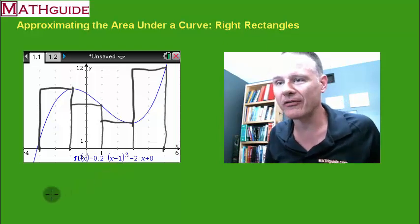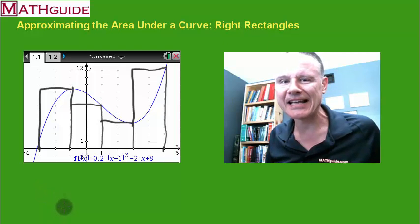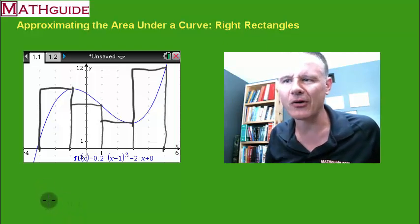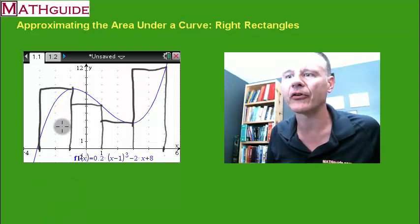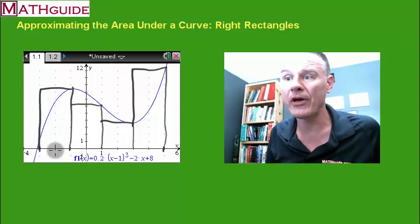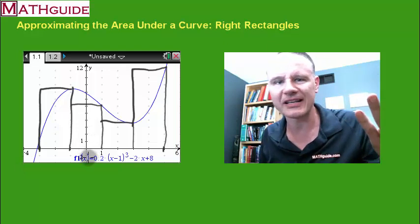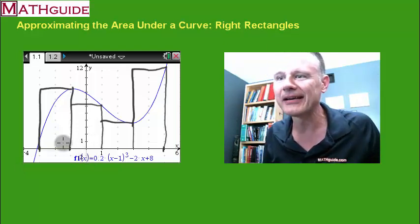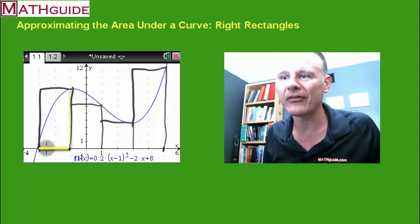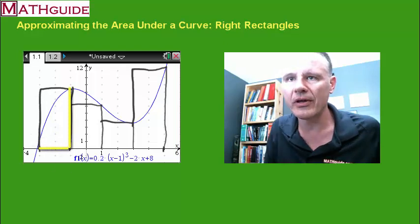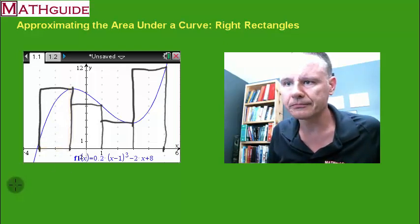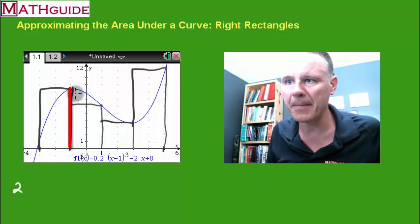Take my word for it that this is at least a good strategy to start with. What's the area of the first rectangle? It's got a width of 2. How do you find the area of a rectangle? You take the width of the rectangle times its height. The width is 2, and what's the height? The height is going to be this distance up when it hits the curve.